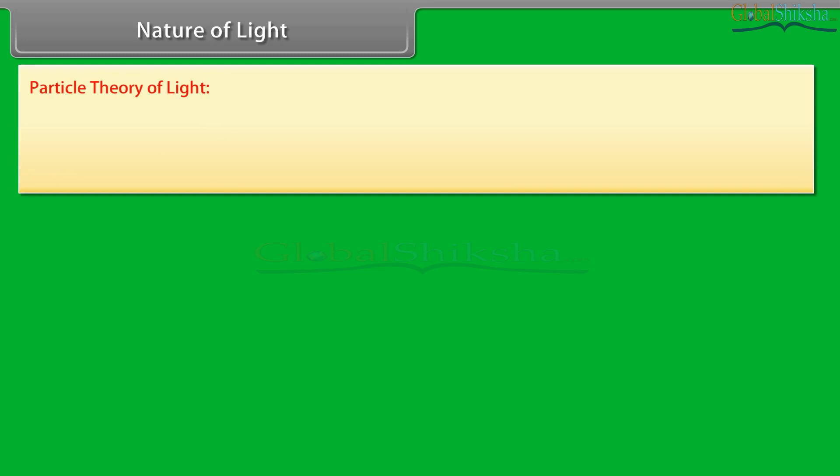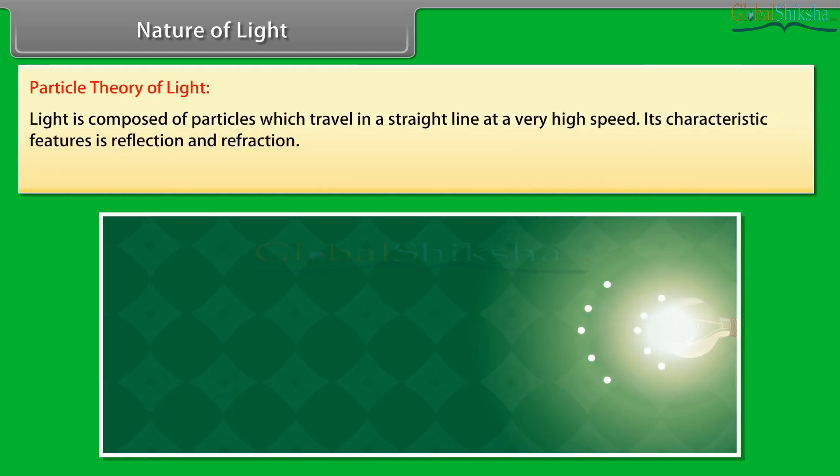Particle theory of light: Light is composed of particles which travel in a straight line at a very high speed. Its characteristic features are reflection and refraction.